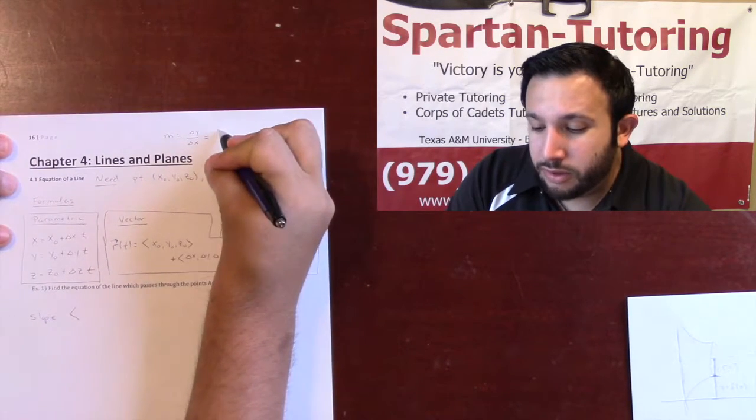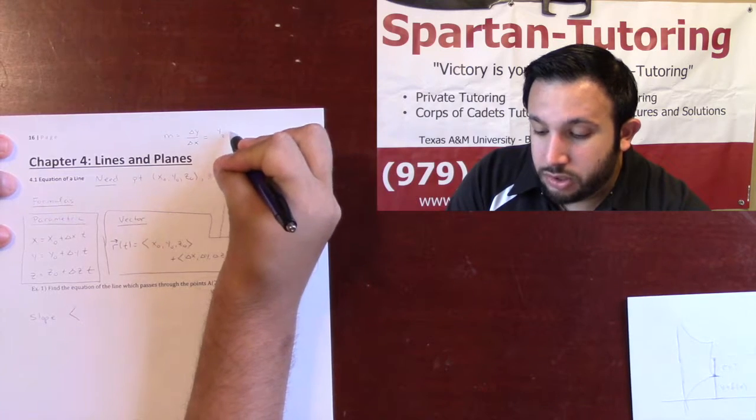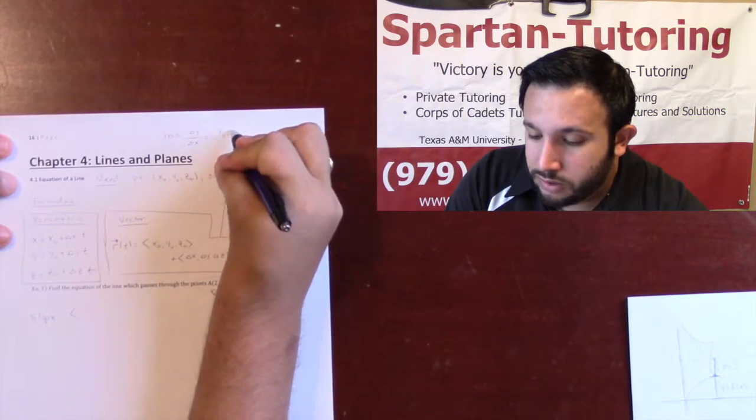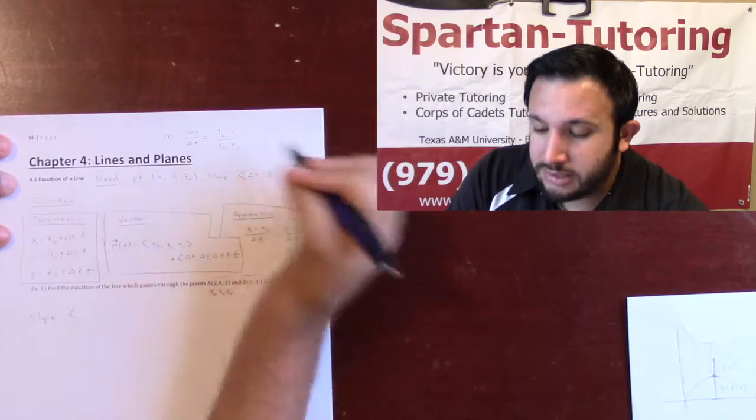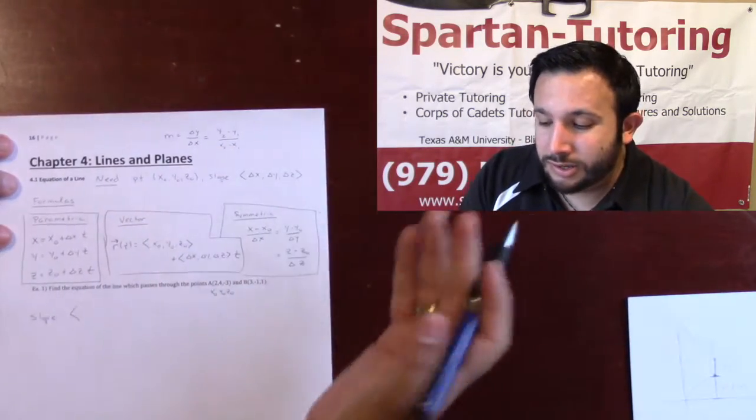And what was this? Remember, the way they taught it back then was y2 minus y1 over x2 minus x1, right? So you're changing y and changing x.